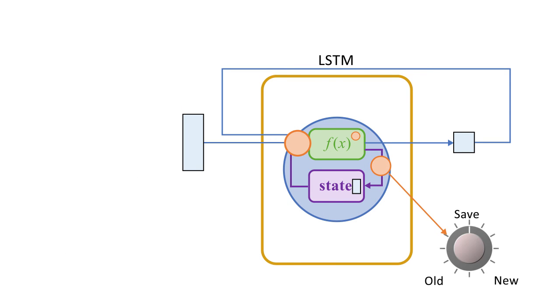Similarly, there are gates to control how much of the current information is saved to the state, and how much the output is determined by the current calculation versus the saved information.